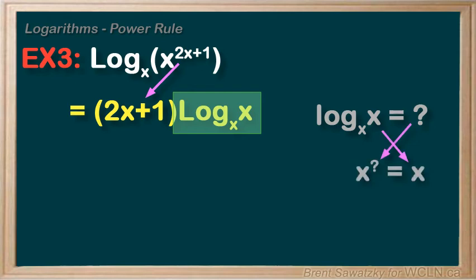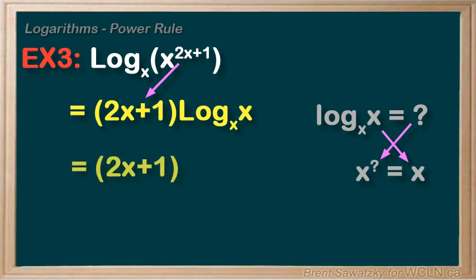And we see that x, the base, to the power of our question mark equals x. And we know that it would have to be 1. Anything to the power of 1 is just itself. So we can replace the log base x of x with 1. And see that our result is simply 2x plus 1.